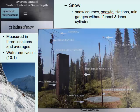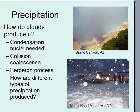We use SNOTEL stations to measure snowfall, but in some cases you can also take a rain gauge, remove the inner funnel, and just use the inner cylinder to measure how many inches of snow has fallen. Depending on how important accuracy is, different methods will be used, though SNOTEL stations are far more accurate than using a rain gauge.